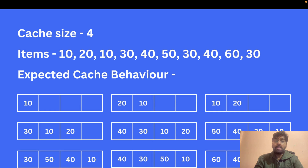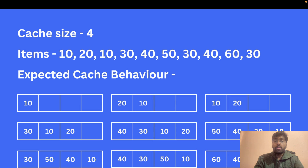Let's take the first item, which is 10. We first check if 10 is already present in the cache or not. There are two things: hit and miss. If that item is already present in the cache then it's a hit; if it is not present then it's a miss. Here we have a miss first, so we simply push that item into our cache.